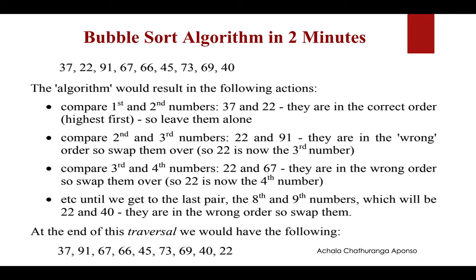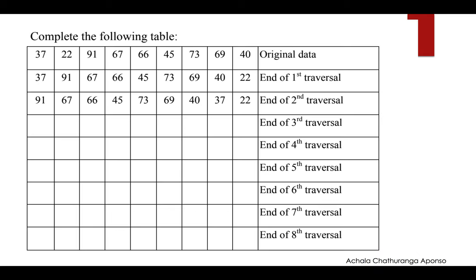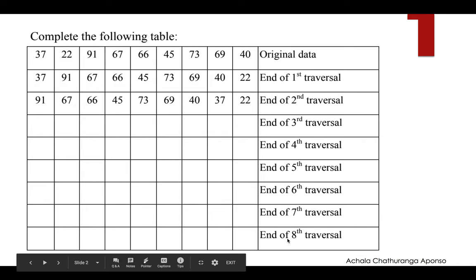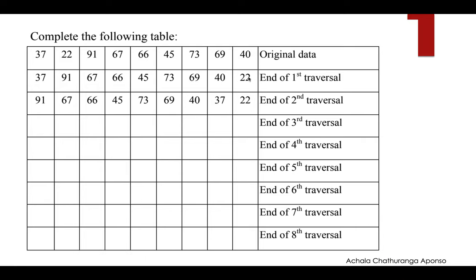In the next traversal, the next smallest number will find its correct place. In the first traversal 22 found its place; after the second traversal, number 37 also found its correct place. As we continue — third, fourth, fifth traversal — numbers one by one will find the correct place. From the rightmost corner, gradually the number set comes to a proper order.